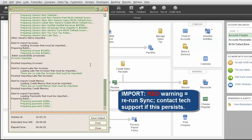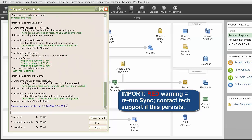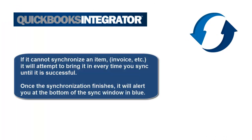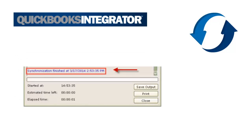These messages are generally some type of warning. Simply run the Sync again. If, however, the message persists, contact Technical Support. If it cannot synchronize an item, such as an invoice, it will attempt to bring it in every time you sync until it is successful. Once the synchronization finishes, it will alert you at the bottom of the Sync window in blue. Then simply click on the Close button, or on the X in the top right corner.